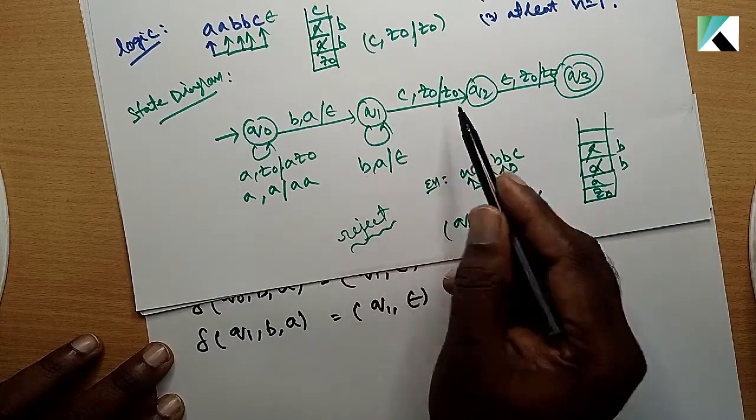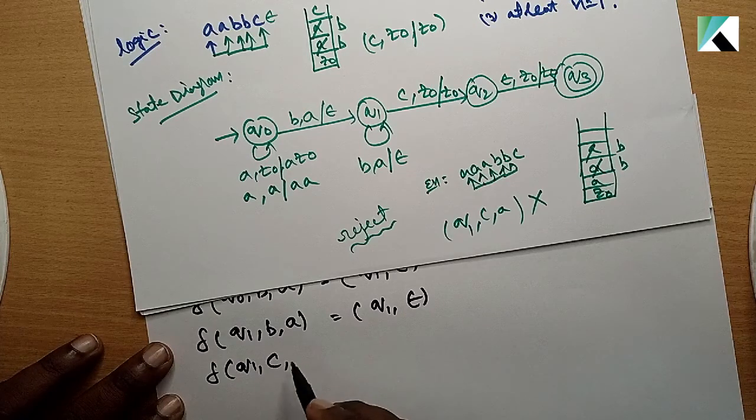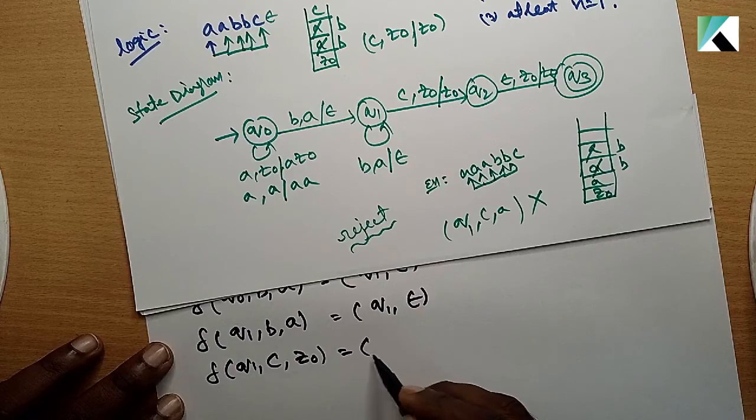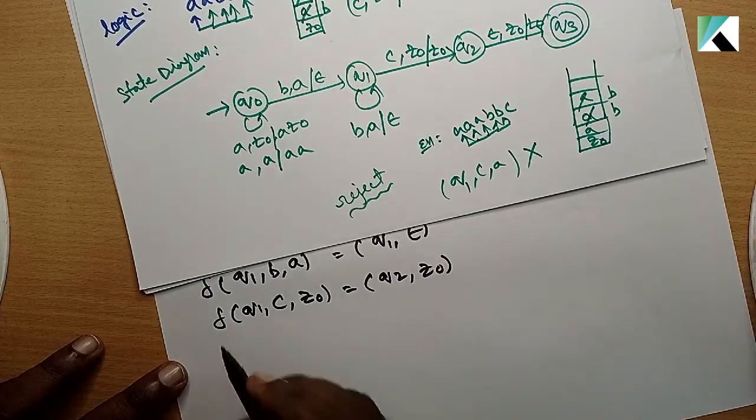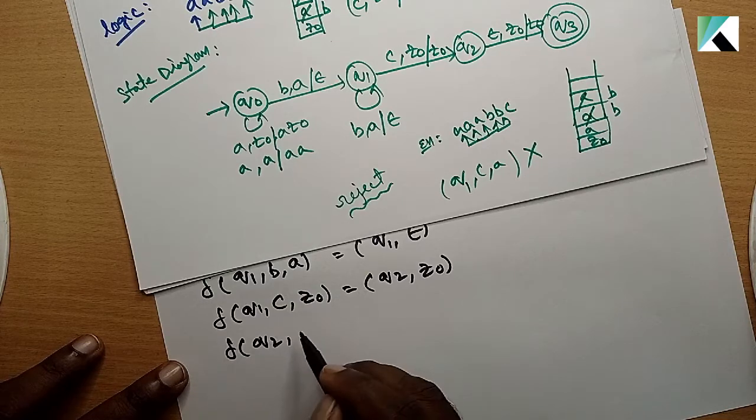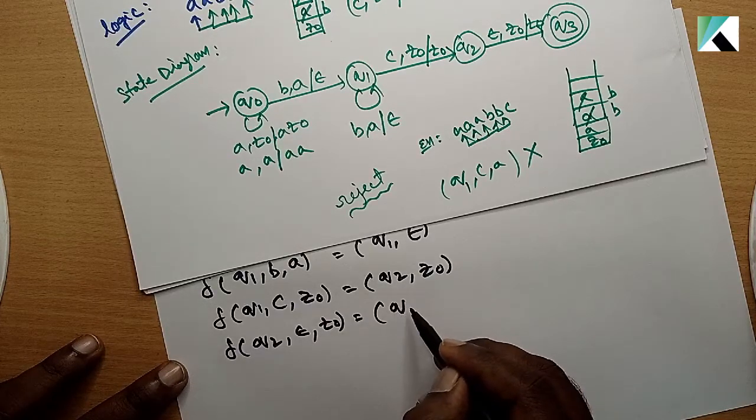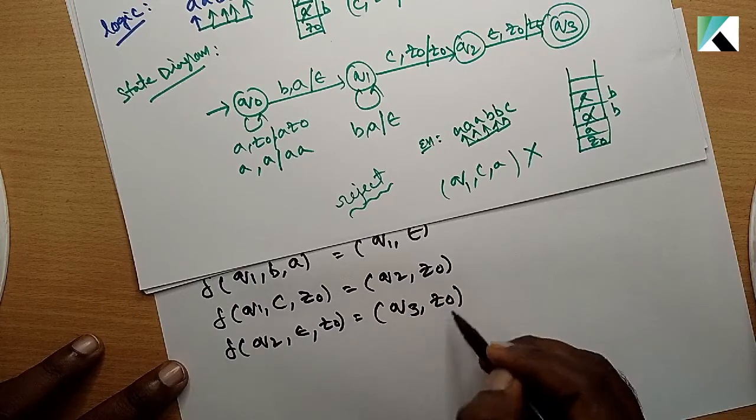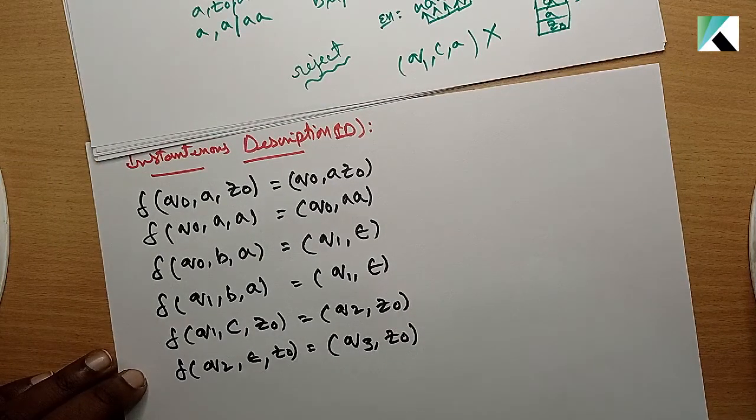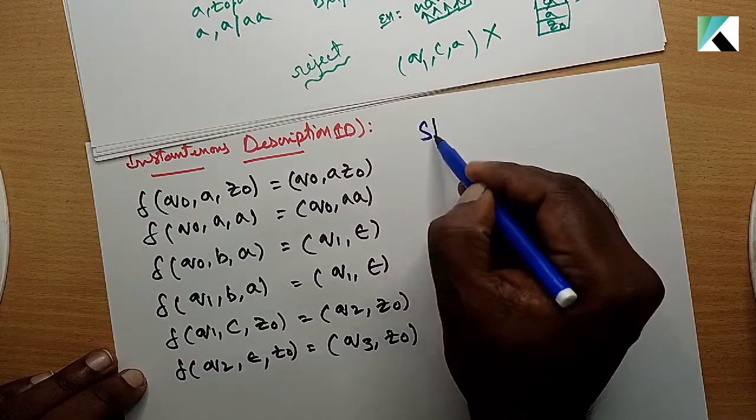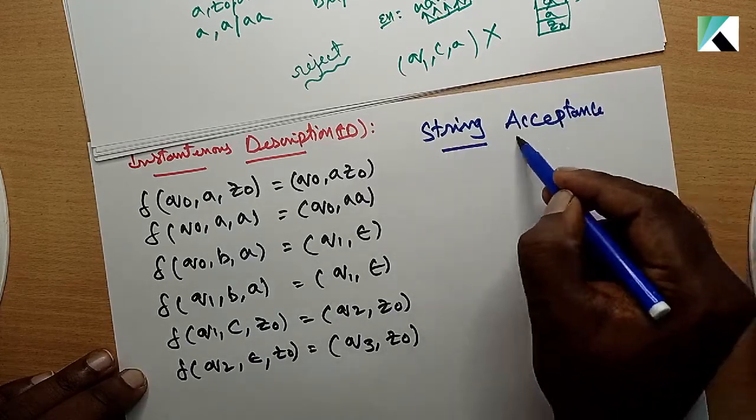Delta of Q1, input character from the input tape is C, top of stack is Z0, state changes to Q2. Then delta of Q2, epsilon, top of stack is Z0, we reach state Q3. These are the instantaneous descriptions.